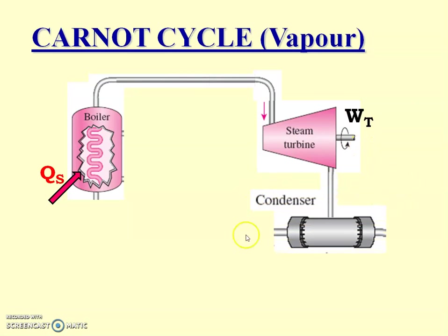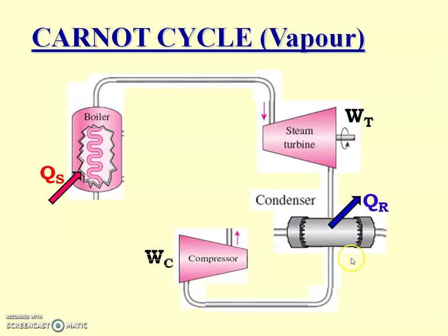The third component is the condenser. The steam coming out from the steam turbine enters into the condenser, where heat is rejected by the steam and the steam is converted into condensate, that is liquid. The mixture of steam and water then enters into the compressor, where the pressure and temperature of the mixture is increased and supplied to the boiler. Here, work is supplied to the compressor.